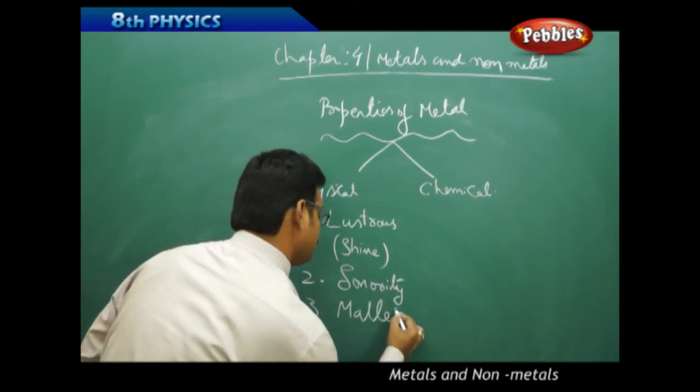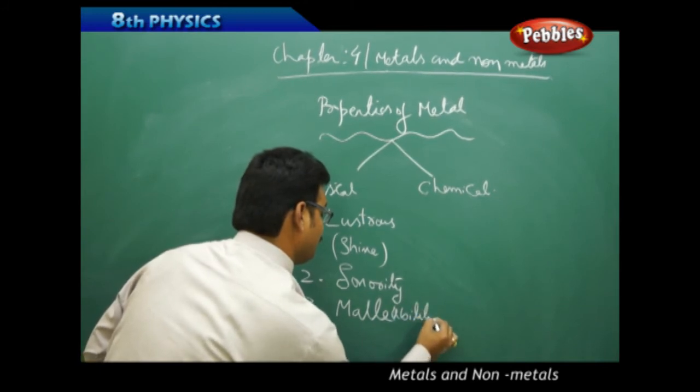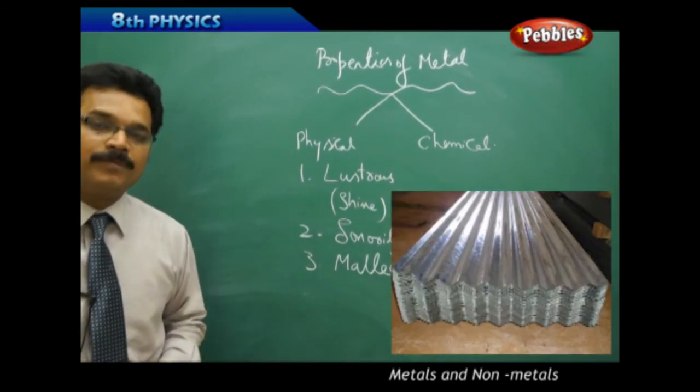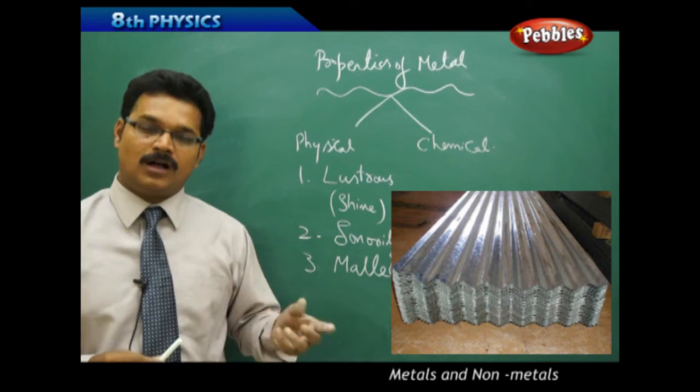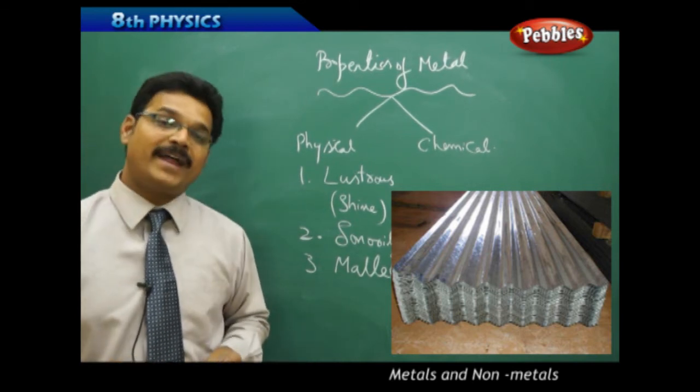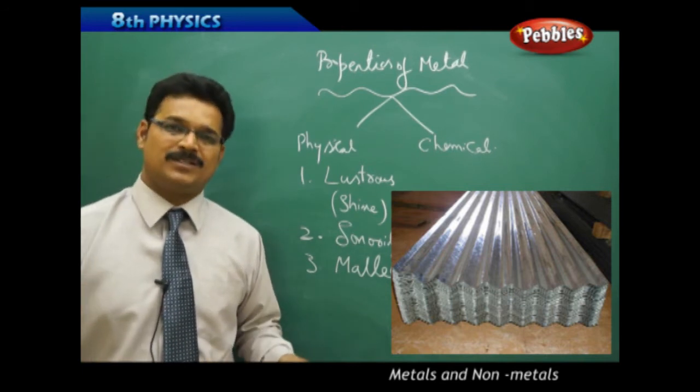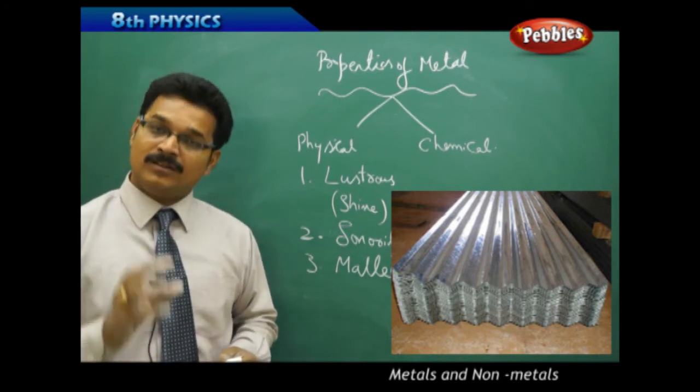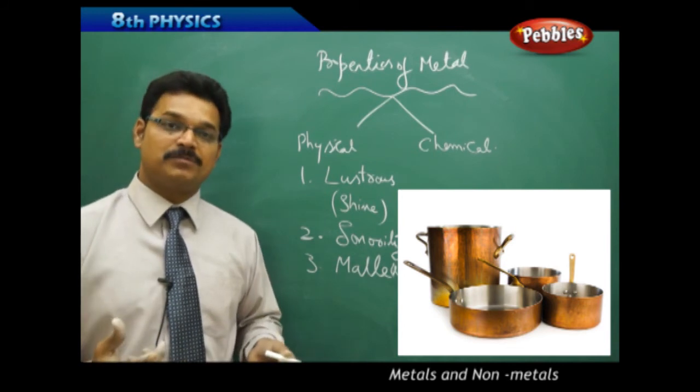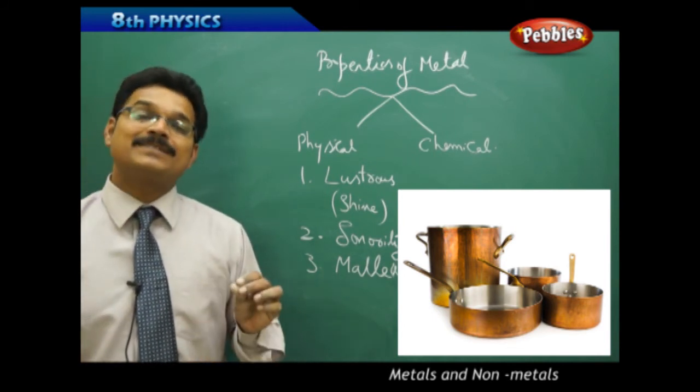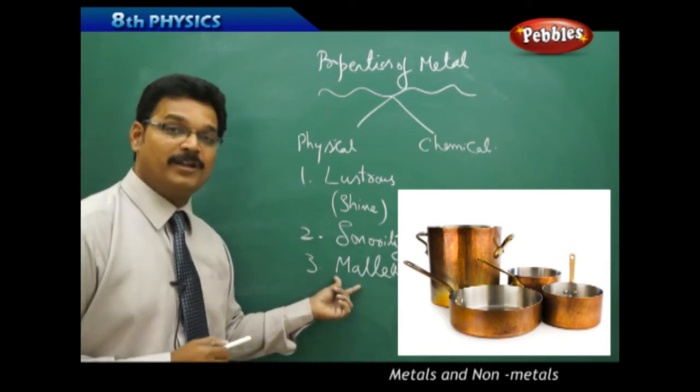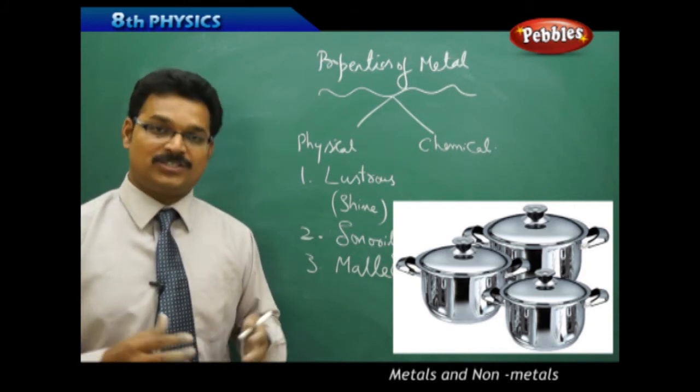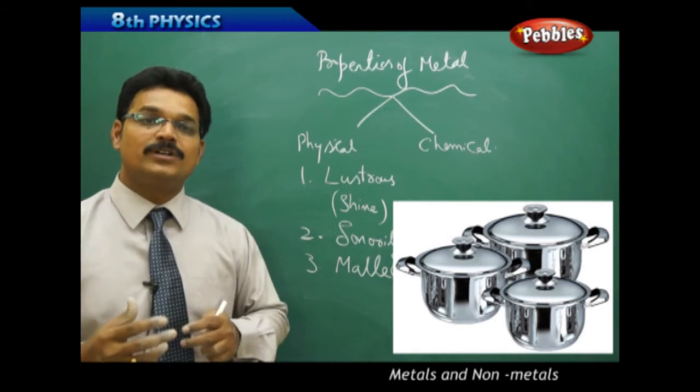The next property is malleability. What is malleability? When you see metals like iron, copper, aluminum, and silver, you will find them in different shapes and sizes. Sometimes you can find iron in cylindrical shape, sometimes in spear shape, rectangular shape, triangle shapes. All these types of shapes are possible because of this property called malleability. Malleability means the metals can be stretched and molded into different shapes.